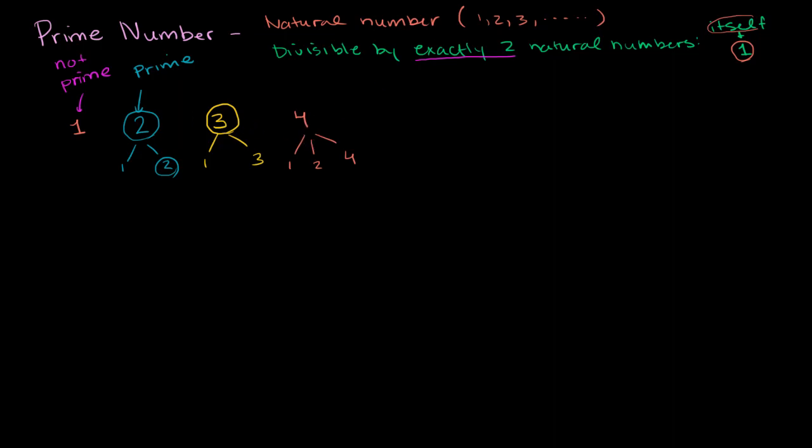Let's try out 5. So 5 is definitely divisible by 1. It's not divisible by 2, 3, or 4. But it is exactly divisible by 5, obviously. So once again, it's divisible by exactly two natural numbers, 1 and 5. So 5 is prime.